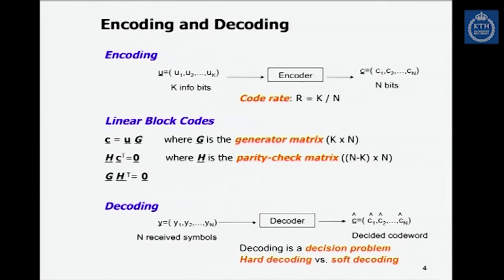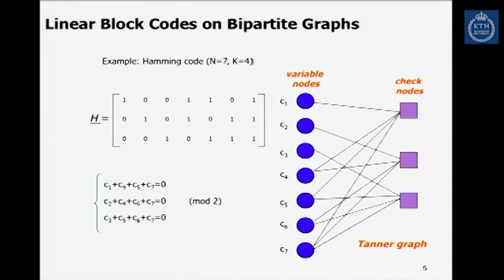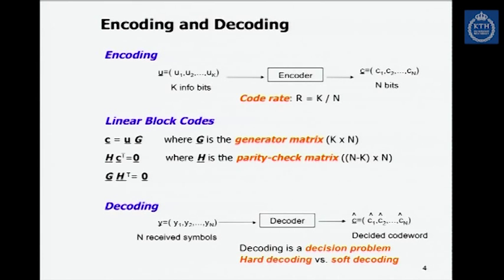For the decoding, once the decoder receives a vector y of received symbols y1, y2 up to yn, the decoder has to find among all possible code words the one most likely to have given rise to the received symbol y. So decoding is a decision problem. We can have hard decoding or soft decision decoding. More recently, instead of using the matrices G and h to describe a code, we also use graphs.